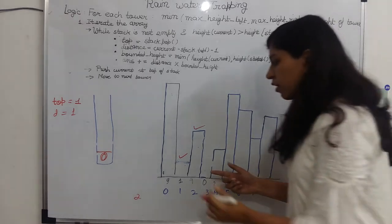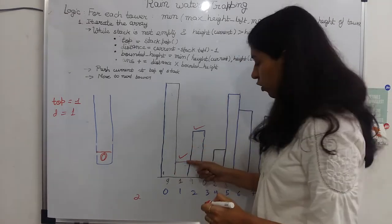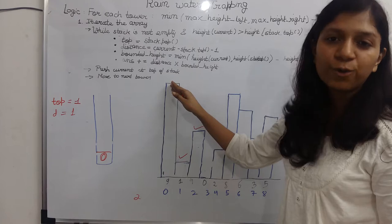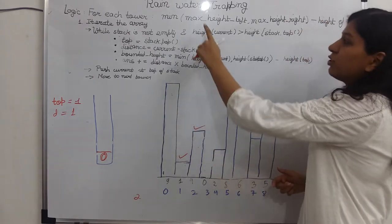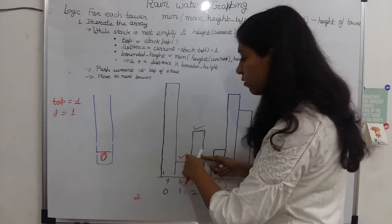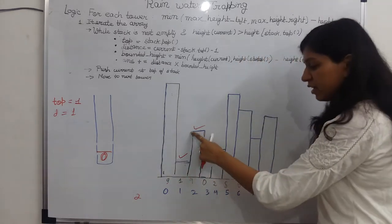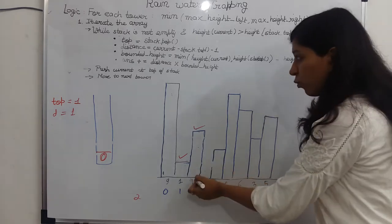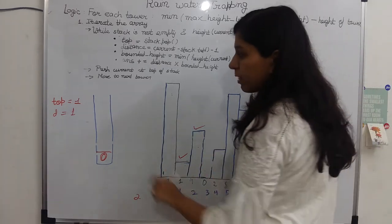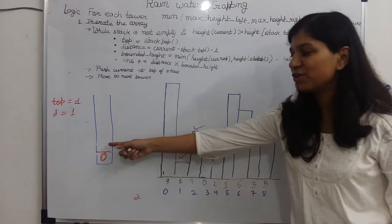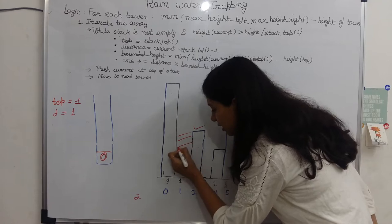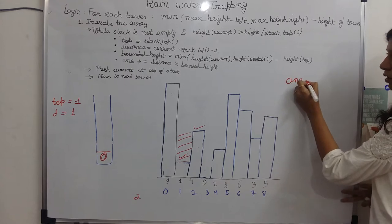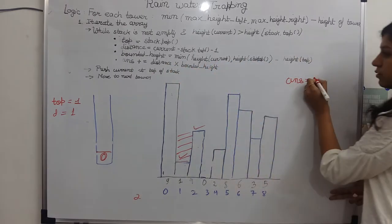How much is the bounded height? We know that this tower is small and this is bigger. The minimum is this 4. So the bounded height is 4 minus height of the top, which is 1. So 4 minus 1 is 3, which is this area. Distance is 1 and bounded height is 3. So the answer so far is 3.